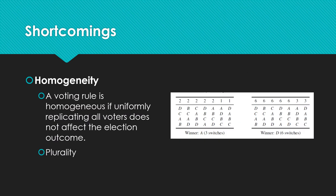But it still has some strong critiques. One is homogeneity. A voting rule is homogeneous if uniformly replicating all voters does not affect the election outcome, such as with plurality rules. The example given in Table 1 shows that Dorses' rule does not satisfy homogeneity.